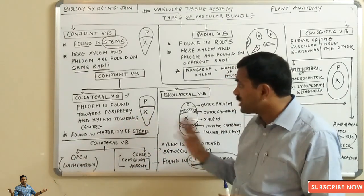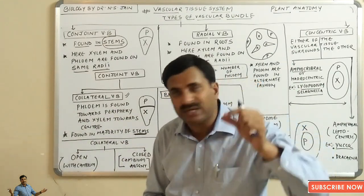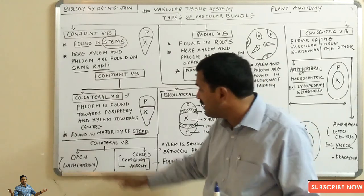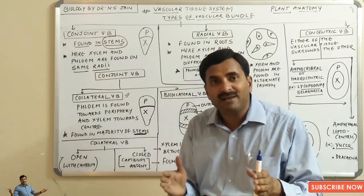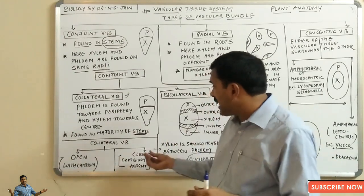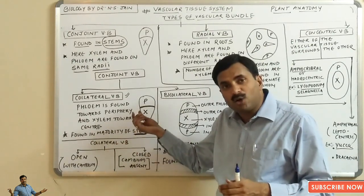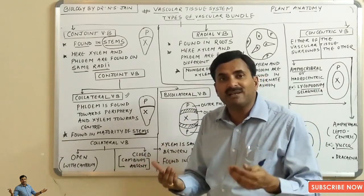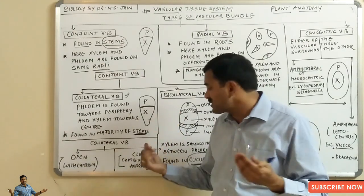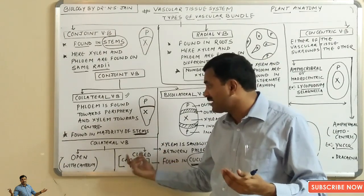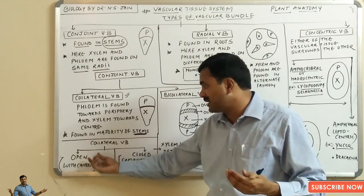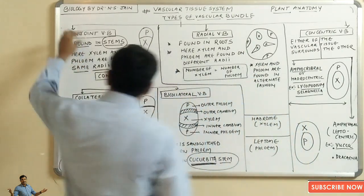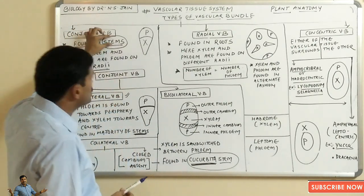The collateral vascular bundle is further classified into two categories. If cambium is present in a collateral vascular bundle, it is called an open vascular bundle, which is a feature of dicots. If cambium is absent, it is called a closed vascular bundle, which is a feature of monocots. Because cambium is absent in monocots, no secondary growth occurs. In dicots, the open collateral vascular bundles have cambium and are responsible for secondary growth.